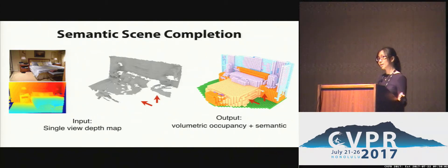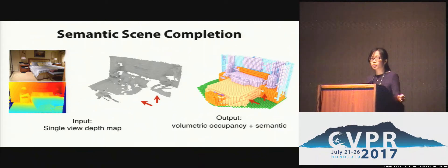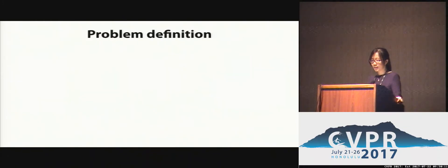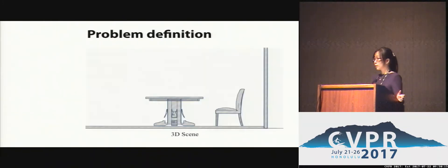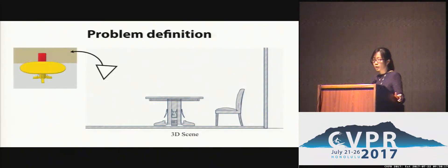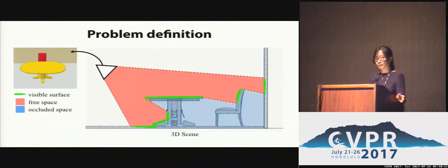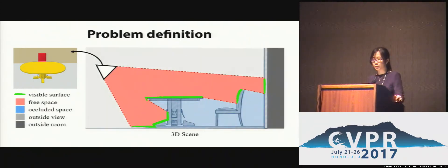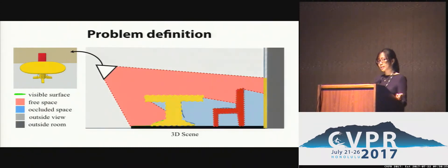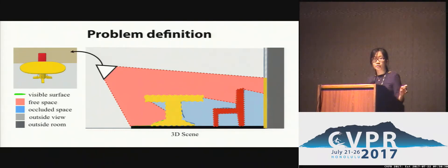We believe this task is a fundamental building block for many vision and robotics applications that require a joint understanding of geometry and semantics. Specifically, given a 3D space and a camera view, we break up the space into visible surface, free space, occluded space, and space outside the field of view. The goal of our task is to predict voxel occupancy and semantic labels for all the voxels on the visible surface and occluded space.